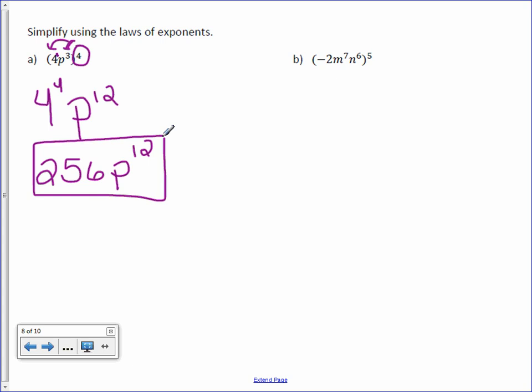With letter B, we need to make sure we put negative 2 in parentheses. Because negative 2 is being raised to the 5th power. When we distribute, there's our 5th power.